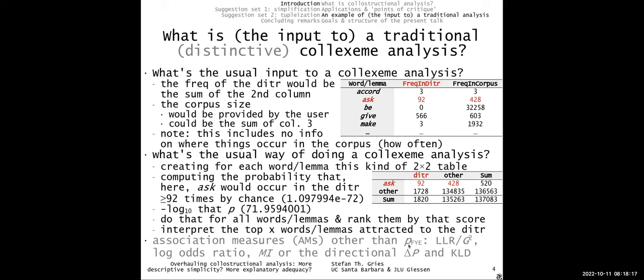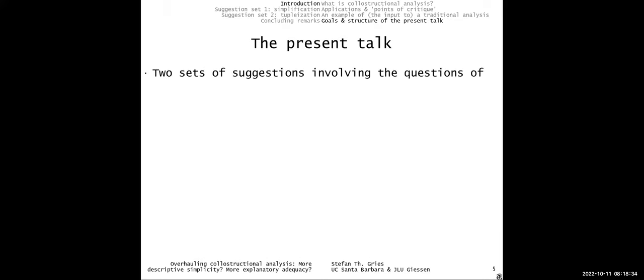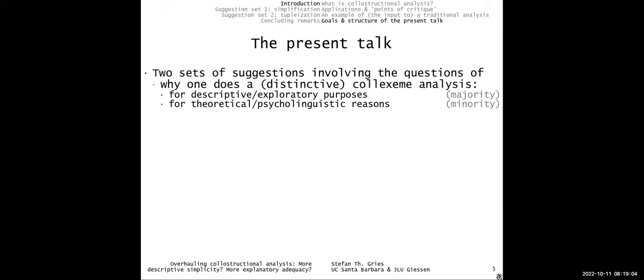Fisher-Yates exact test has been the most frequent measure, but people have also used the log-likelihood ratio and other statistics. So that's what's been done traditionally. Now I want to make two sets of suggestions. They have to do with two questions: first, why do you actually do your collostructural analysis? The two answers I want to distinguish are: one, for descriptive or exploratory purposes — which so far has been the majority of cases — or two, for theoretically informed or psycholinguistic reasons.